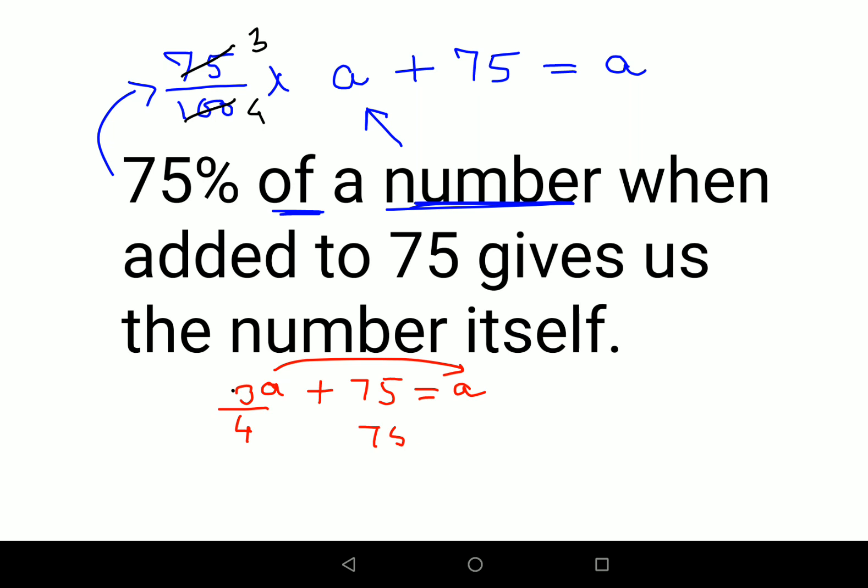Now when you do a minus 3 upon 4a, you get 75 equals to a upon 4. So now your value for 'a' is coming out to be 300 because the 4 gets multiplied to 75.